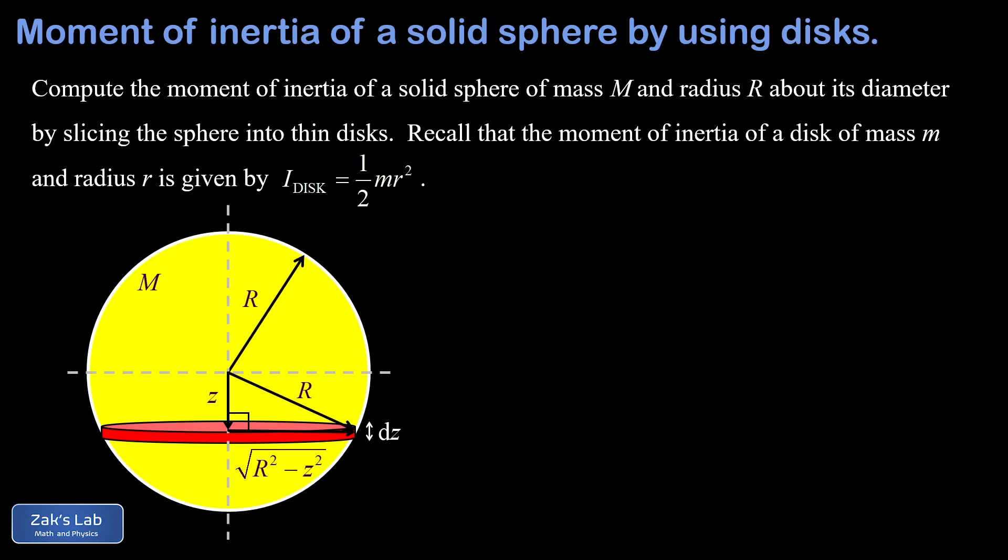Now we're ready to start building our moment of inertia integral and I'm going to start by just trying to express the mass of this disk in terms of the variable z. Because it's an infinitesimal slice, the mass is infinitesimal. I'm going to call that dm. The mass of this disk is given by the density, and we'll use the Greek letter rho for that, times the volume of the disk.